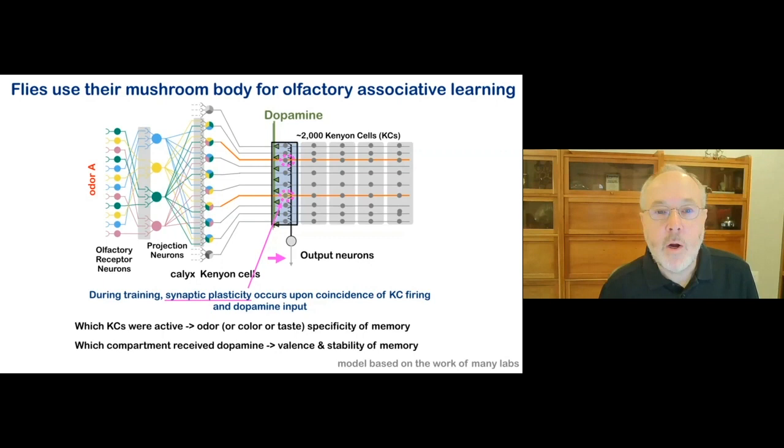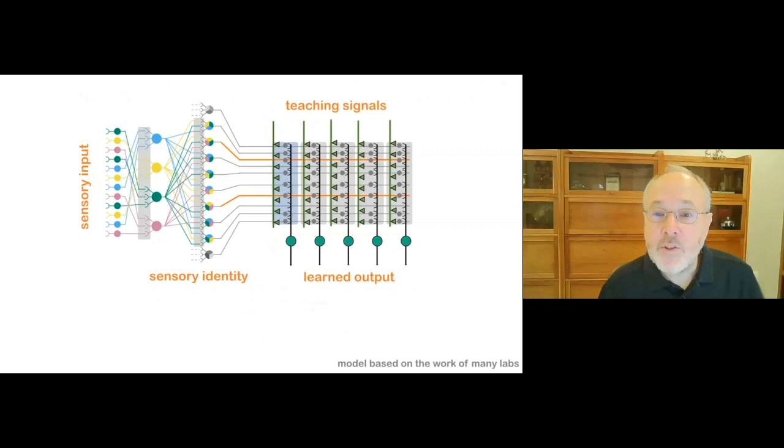It turns out that dopamine neurons innervating the different compartments promoting memory formation are very different and they promote different learning rules. For example, memory can be short-term or long-term. It can be positive, appetitive or negative, aversive. Dopamine neurons in vertebrates, like your cells, are also similarly heterogeneous in their activities.